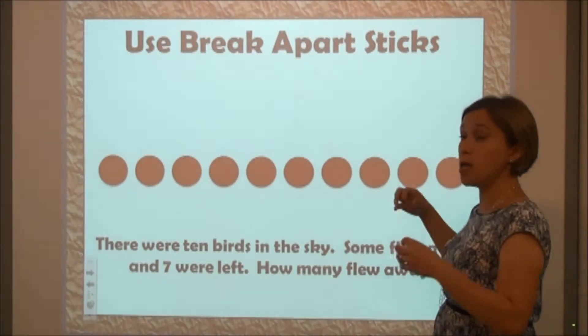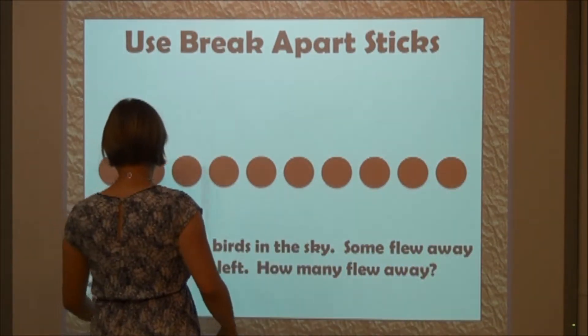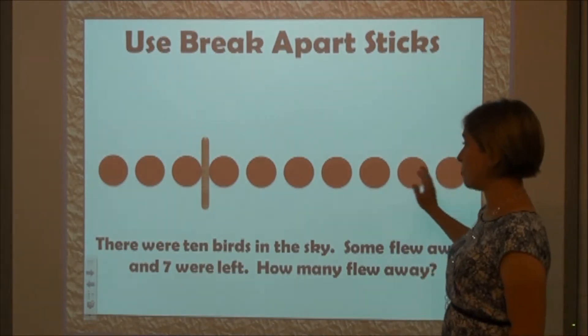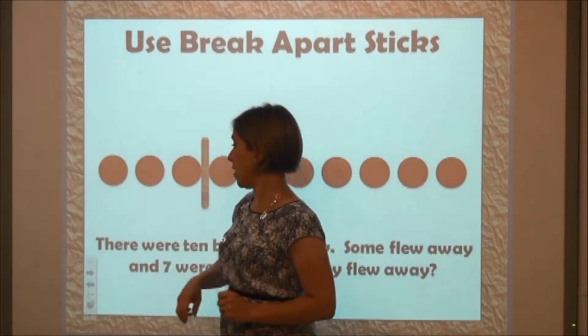We would start by building the number, the total amount, and then we would break apart the part that we know. We know the number seven. They definitely have seven left, so we break apart the seven and we figure out, okay, this missing part is the part that flew away.